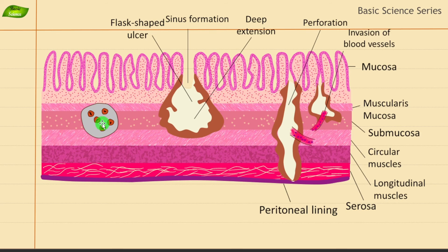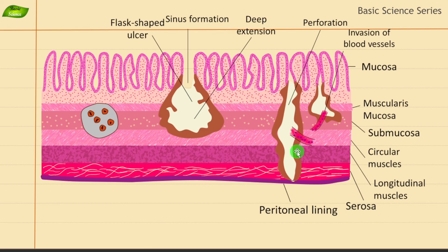Perforation refers to the rupture or hole that forms in the wall of the intestine due to severe tissue damage. If the damage is so extensive that there is a hole in the intestine, we call it perforation. In the context of amoebic ulcer, perforation can occur when the ulcer erodes all the way through the intestinal wall. Perforation is a serious complication of amoebic ulcer and requires immediate medical attention.